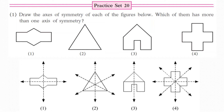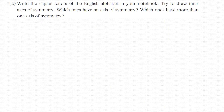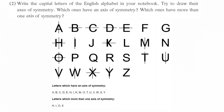You are all supposed to copy down the answers in your book. Now let's come to Question 2: Write the capital letters of the English alphabet in your notebook and try to draw their axis of symmetry. Which ones have an axis of symmetry? Which ones have more than one axis of symmetry? Let's find this out. Here we have written all the capital letters of the English alphabet and we will try to draw the axis — the line which divides that alphabet into two or more equal parts. It is not necessary that the line should be vertical only or horizontal only.